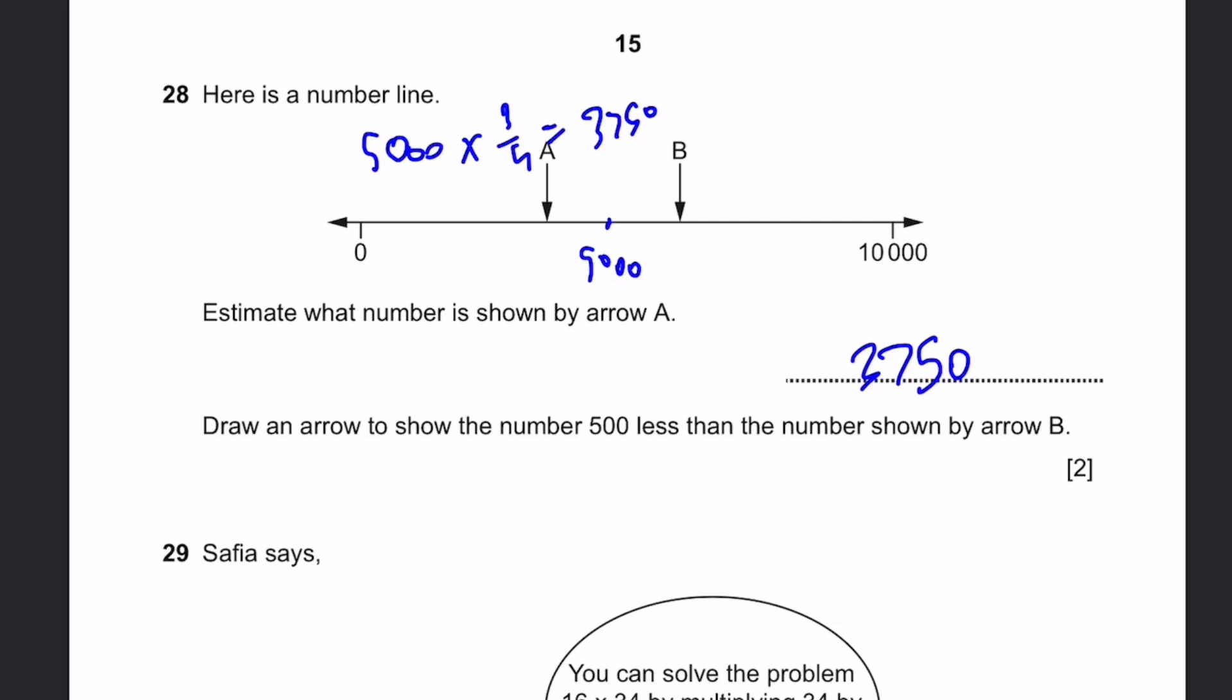Now draw an arrow to show the number 500 less than the number shown by arrow B. Arrow B is the same distance from 5,000 as arrow A, 3,750. That means this will be 1,250 away. Now we just add that, so we get 6,250. So 5,750 is what we need if we subtract 500. And that'll be approximately this much. That's the answer.